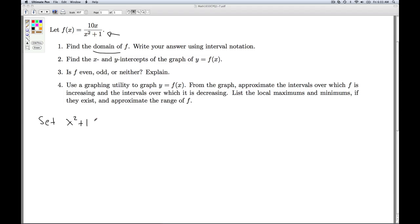So we set the denominator, in this case x squared plus 1, equal to 0, and we solve. We subtract 1 off both sides, and then take the square root. And these are going to give us imaginary numbers.